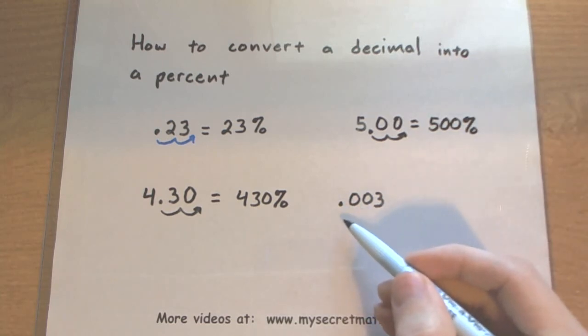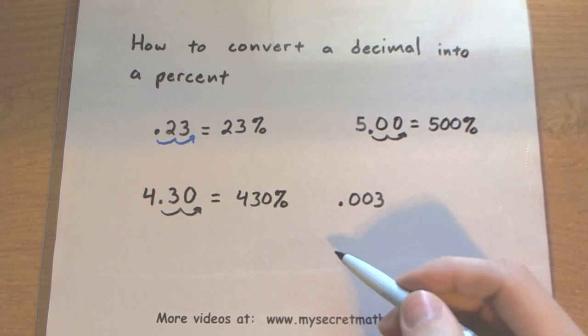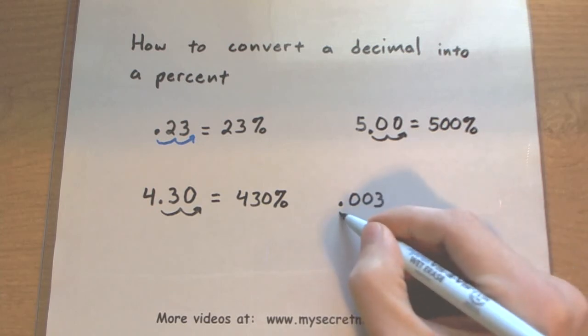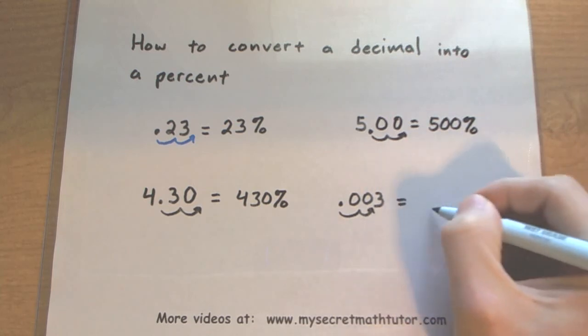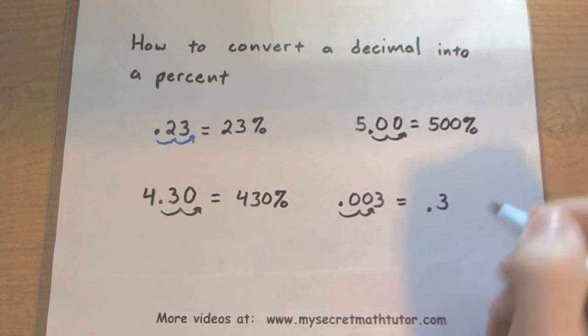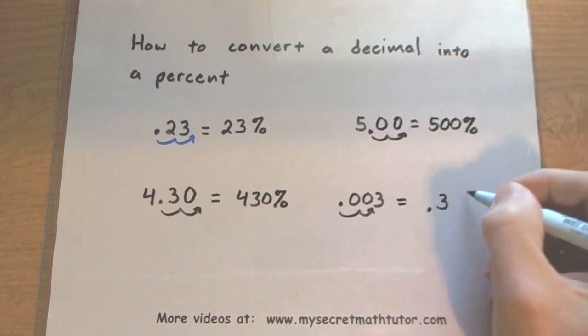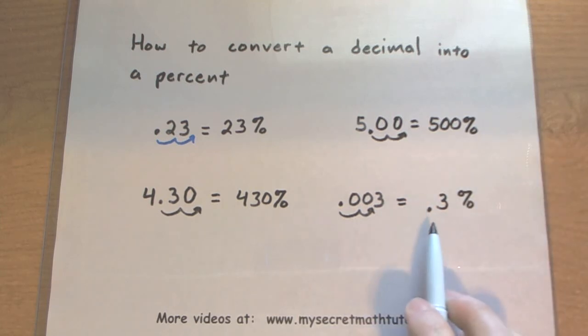One last one. This is .003. Don't let those zeros fool you. Let's move it over to the right twice. So now the decimal is going to be right in front of the three, and this will equal .3%. Now it's okay if your percent still has a decimal in it, just as long as that decimal is in the right spot.